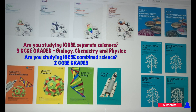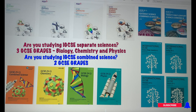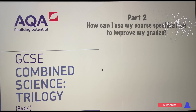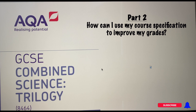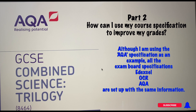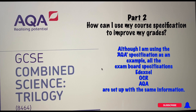Now that we know which course you're following, we'll look into your specifications — which may also be called your syllabus at school. To show you how to use your science specifications, I'll be using the AQA Combined Science Trilogy specification as an example. However, it makes no difference whether you are doing Edexcel, OCR, or an IGCSE, as all specifications are set up with exactly the same information and can be accessed in exactly the same way.